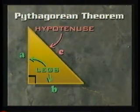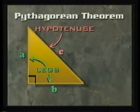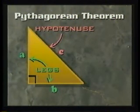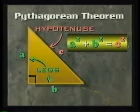The Pythagorean theorem says that the square of the length of the hypotenuse is equal to the sum of the squares of the lengths of the two legs. In this figure, we have labeled the hypotenuse C and the two legs A and B. The theorem can be stated as A squared plus B squared equals C squared.